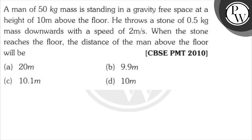Hello, it is Gushan. A man of 50 kg mass standing in a gravity-free space at a height of 10 meters above the floor throws a stone of 0.5 kg mass downward with a speed of 2 m/s. When the stone reaches the floor, the distance of the man above the floor will be?